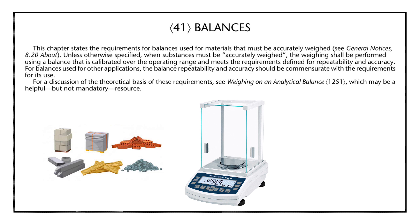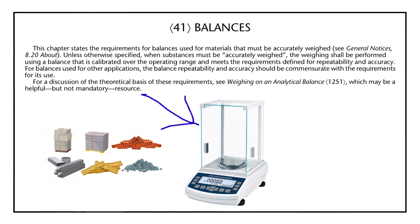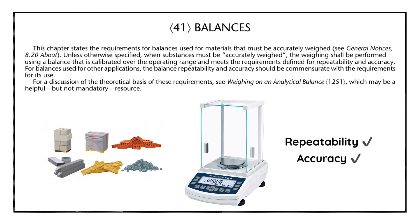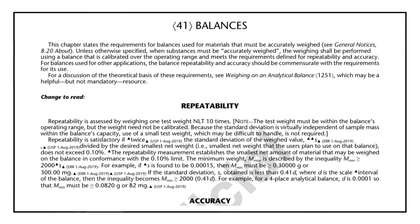Let us understand this statement with the help of an example. Suppose we have to weigh any material accurately using this balance — before using this balance, I have to make sure that this balance is meeting the requirements of repeatability and accuracy as mentioned in USP Journal Chapter number 41. In USP Journal Chapter number 41, there are two balance calibration parameters: repeatability and accuracy.